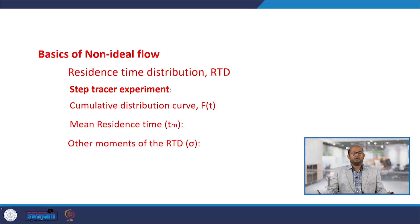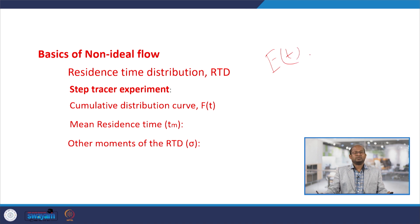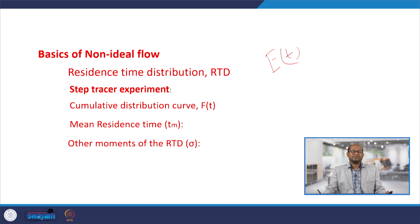In our previous class on pulse experiments, we already discussed that if we want to measure the residence time distribution function, we can express it in terms of E(t). This E(t) or residence time distribution function can be measured either by pulse experiments — the pulse tracer test — or by step tracer experiments. Either way we can conduct the tracer test.